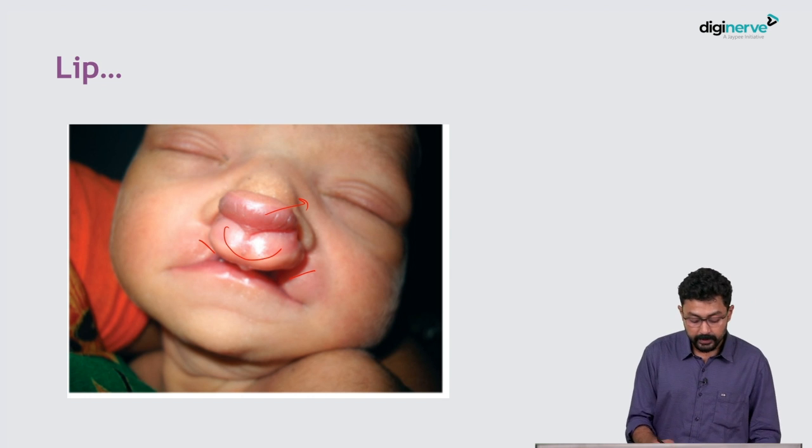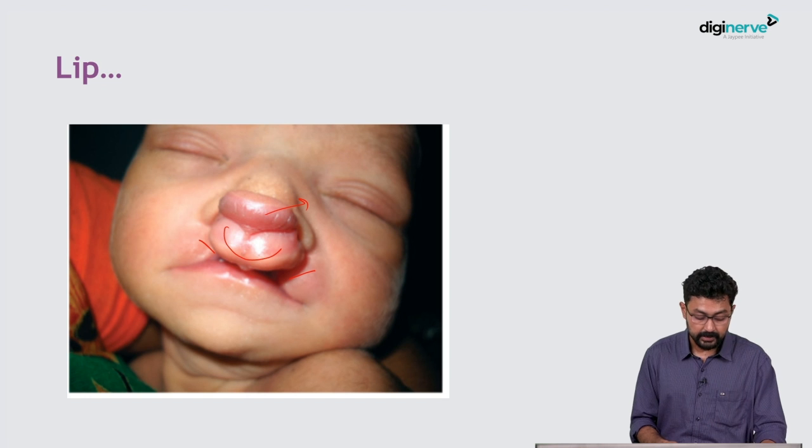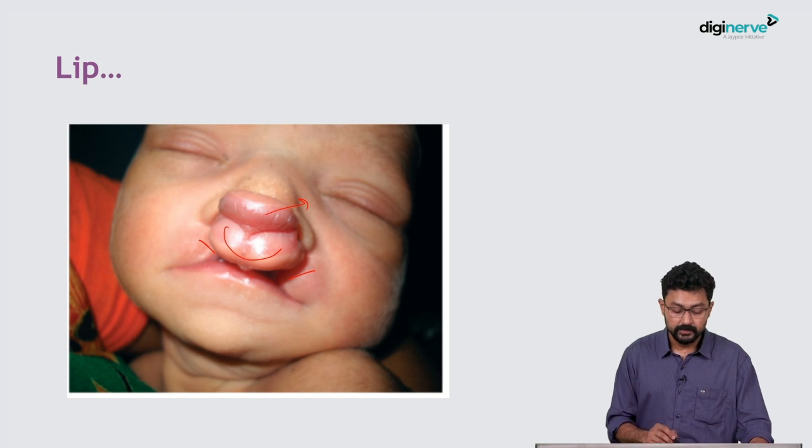During the lip repair, it's also important to repair the maxilla premaxilla and bring it back to its normal position. Otherwise later it becomes difficult to repair the palate, and that is the completion of the deformity correction.